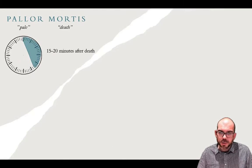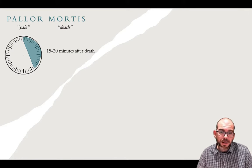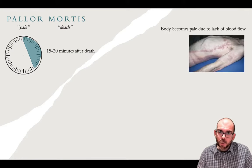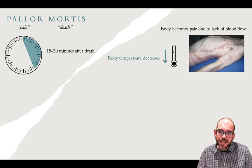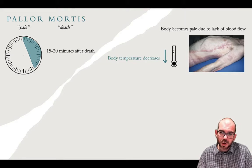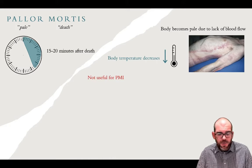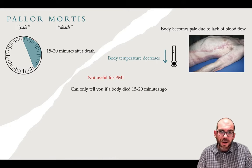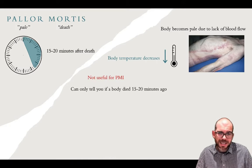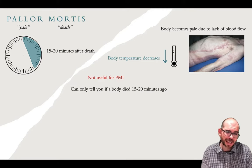Pallor mortis means pale death. This occurs in the first 15 to 20 minutes after death — the body becomes pale due to lack of blood flow, and body temperature begins to decrease. This is not very useful for determining a PMI because it only tells you if a body died about 15 to 20 minutes ago, and investigators are rarely finding a body that quickly.